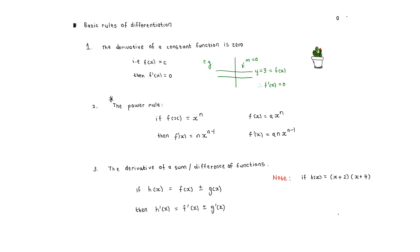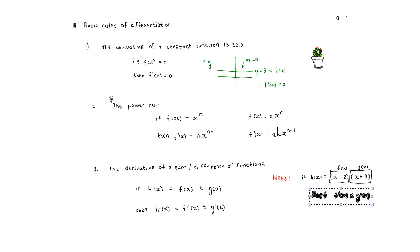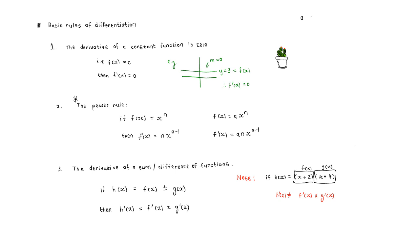For those of you who look up the product rule, you'll see there is a proper way to differentiate a product — but at Grade 12 level, if h of x equals (x + 2)(x + 4), it is not equal to f prime of x times g prime of x. That rule simply does not exist.